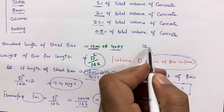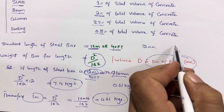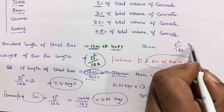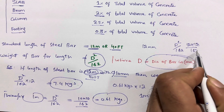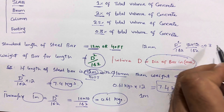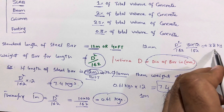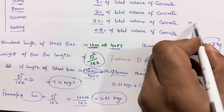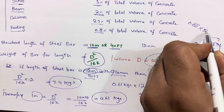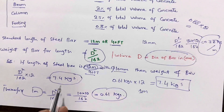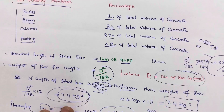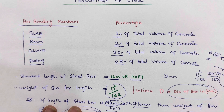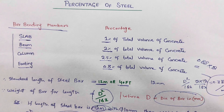If the diameter is 12 millimeters, you can use the same formula d squared divided by 162. Therefore 12 multiplied by 12 divided by 162 gives 0.88 kg per meter. If you have 12 meters, 0.88 kg multiplied by 12 gives the total weight for one full length. This was a short video to guide you for percentage of steel for slab, beam, column, and footing. Thanks for watching, see you in the next video, goodbye.